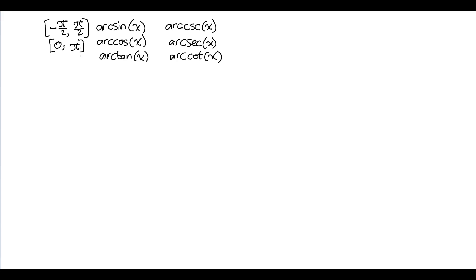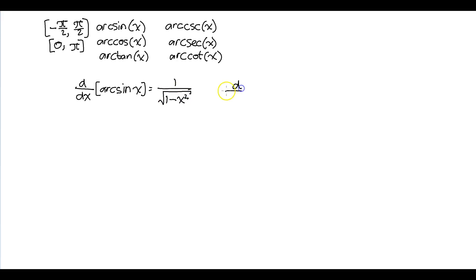So what we're going to do is try to find derivatives of these. If we take the derivative of arc sine of x, we get 1 over the square root of 1 minus x squared. If we take the derivative of arc cosine of x, we get negative 1 over the square root of 1 minus x squared.